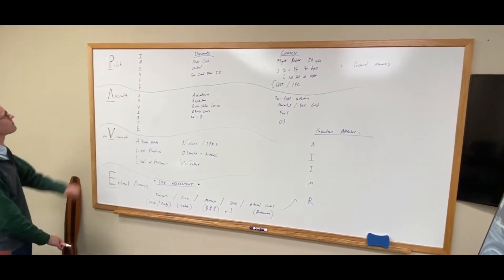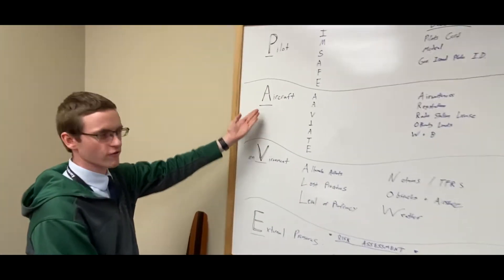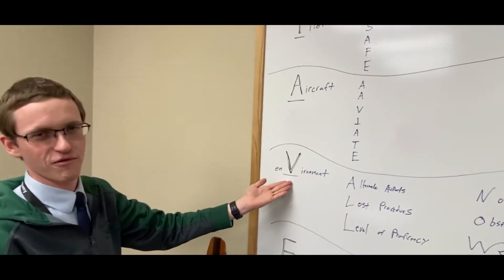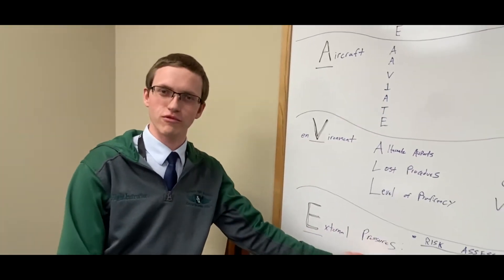So going through it, you have the P for pilot, the A for aircraft, the V, I know they throw this one in here, environment, and then the E for external pressures.